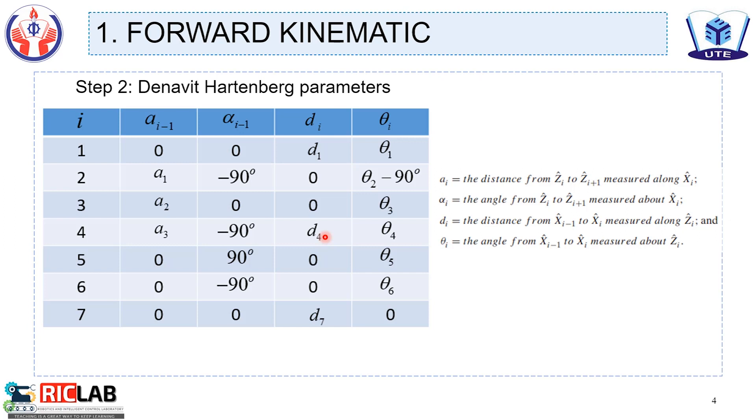From the coordinate axis of robot, we can find the Denavit-Hartenberg parameters like that.